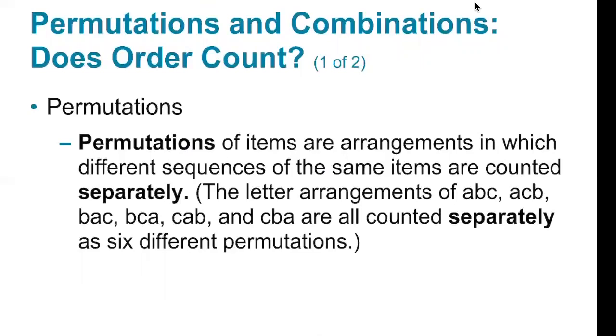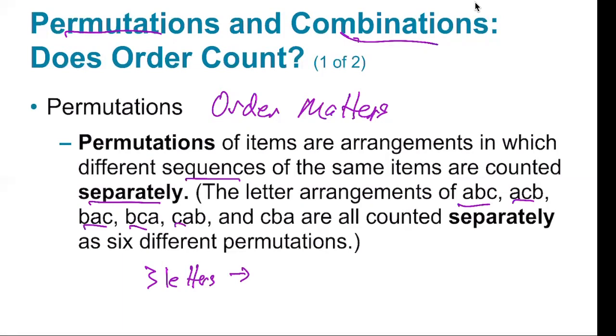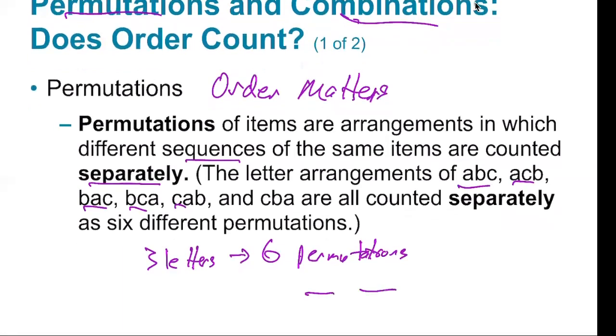Probably the hardest thing in this section is deciding: is something a permutation or combination? What does that mean? Let's start with permutations. The sequences are counted separately. People think of this as 'order matters.' It matters in what order you put the letters. In this case, you have three letters. There are six permutations. You can think of it this way: three choices for the first, two choices for the second, and then there's only one choice for the third. Because the order matters, that's six.